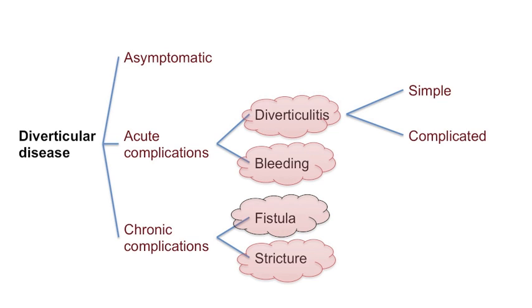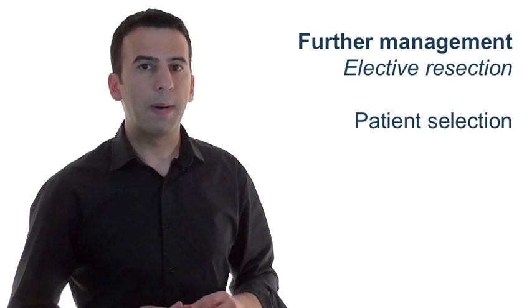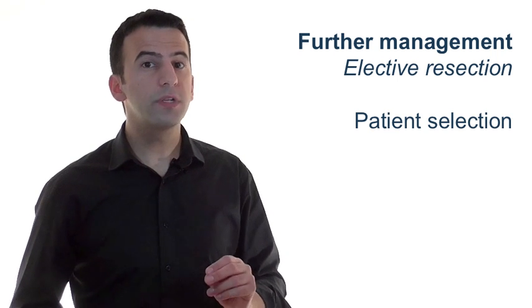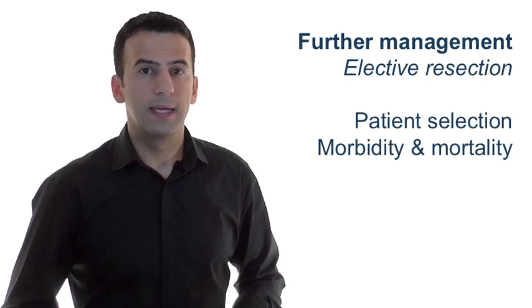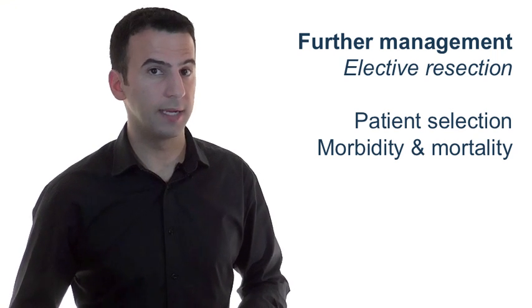Patients who have a colovesicle fistula, so that's a fistula between the colon and the bladder, these patients are at risk of life-threatening gram-negative urinary tract infections, and a diverticular stricture may cause large bowel obstruction, so these are further reasons why an elective resection of a diverticular segment can be considered. But pick your patients well, the risk of mortality is up to 1% from an elective resection. Large bowel resection is not an operation to be taken lightly.